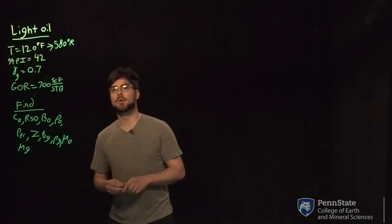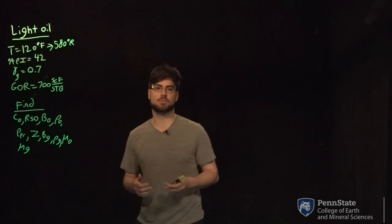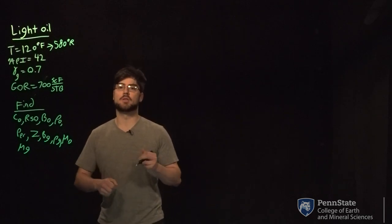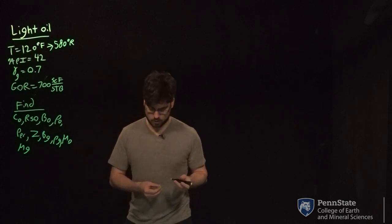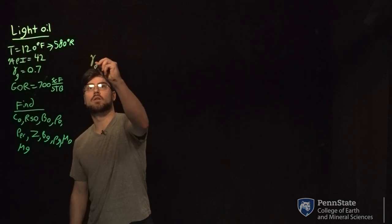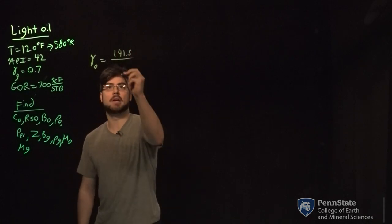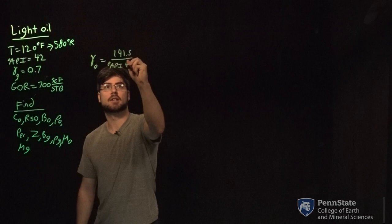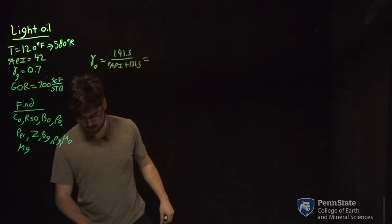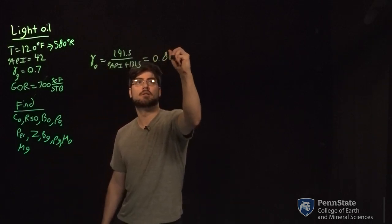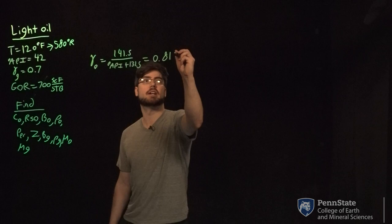This is going to be a PVT problem where we're given four bits of information and we're going to expand it into a lot more using the correlations we've learned in class. The first thing we're going to do is find the specific gravity of the oil using equation 3.38: specific gravity of oil at 60°F equals 141.5 divided by (API + 131.5). Doing that calculation gives a specific gravity of oil of 0.81556, which we'll round to 0.816.